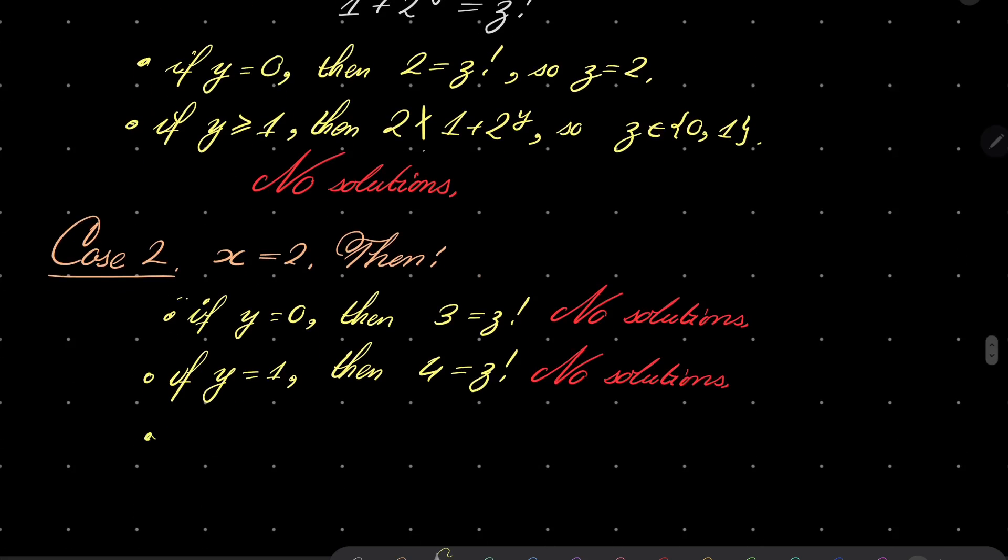If y equals 2, then we have the following: 6 equals z factorial, and we have a solution. So z equals 3.